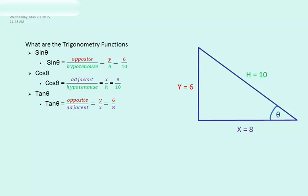Or if we look at a triangle in this example, it's y over h or 6 over 10. We then have cosine theta, which is adjacent over our hypotenuse, or x over h, which is the same as 8 over 10.